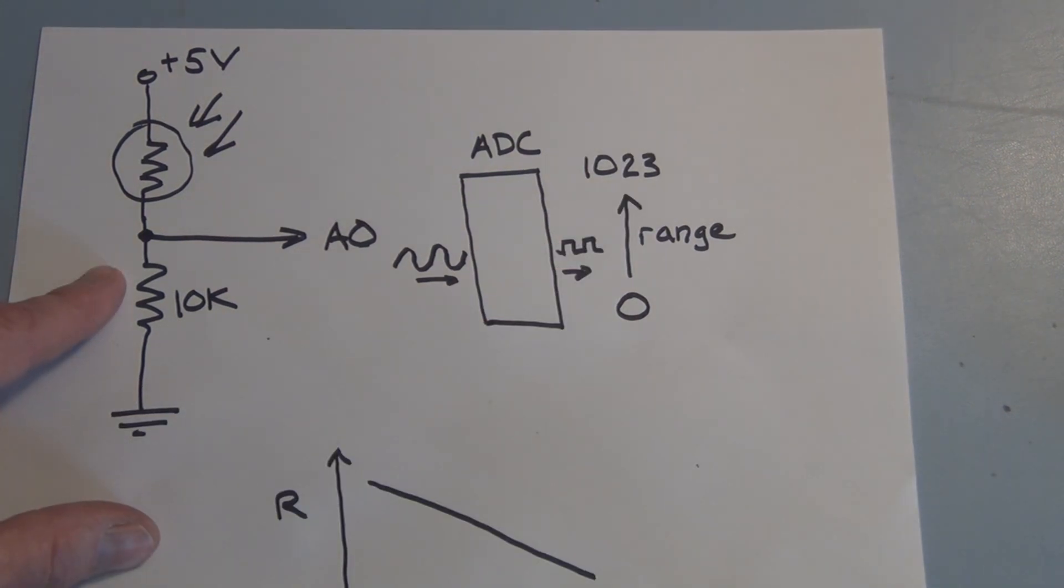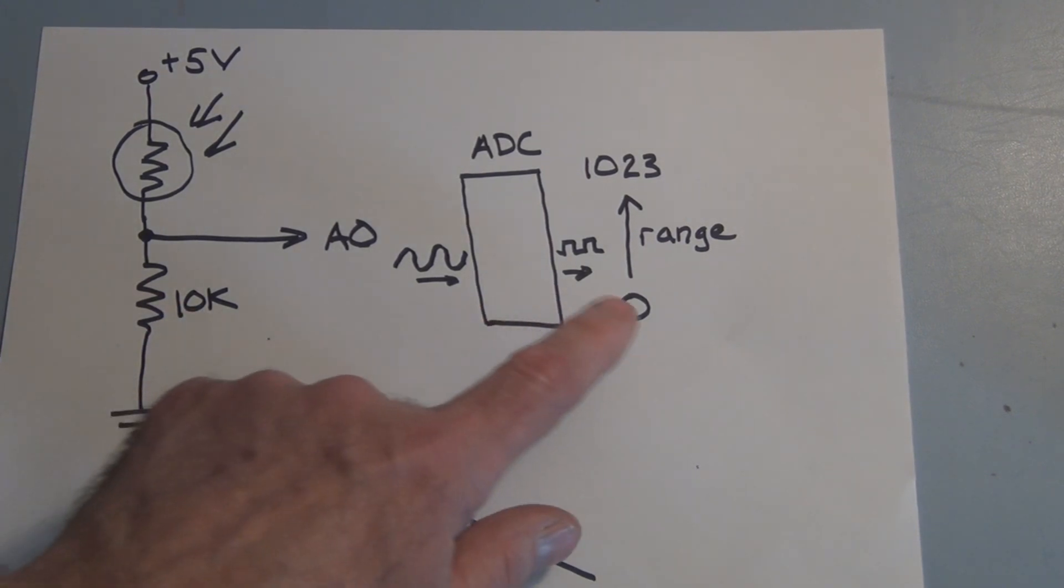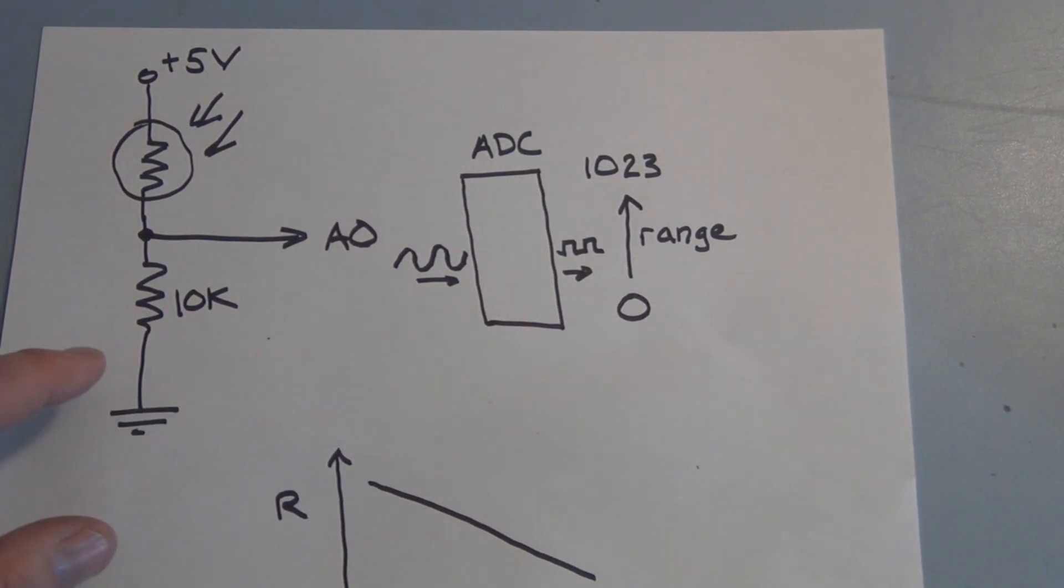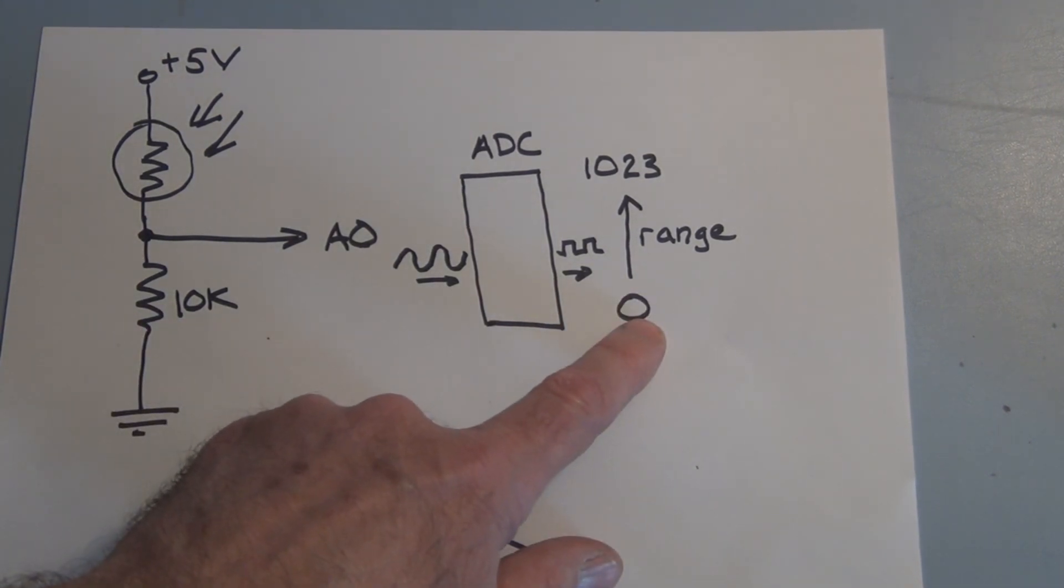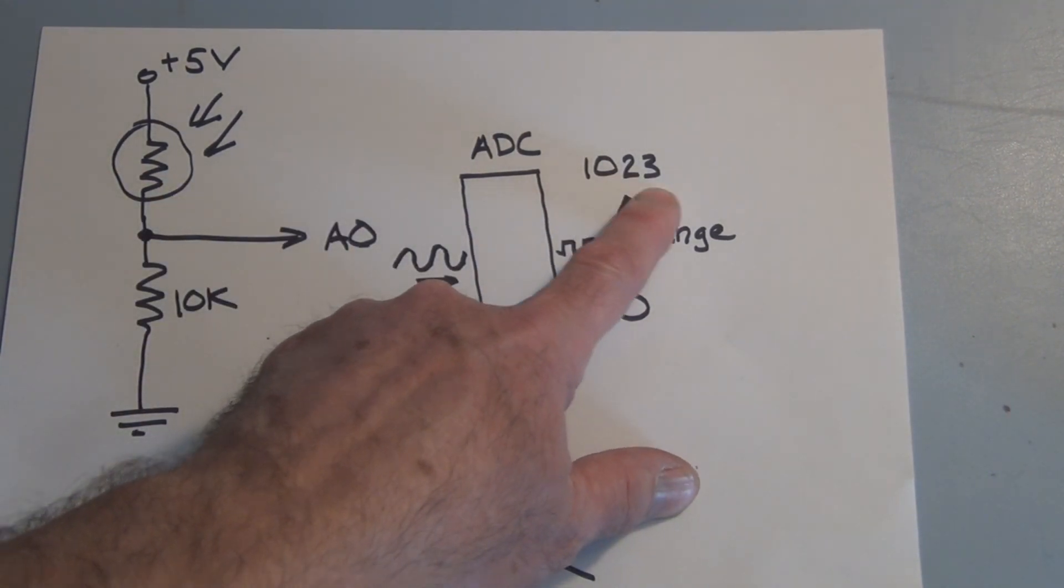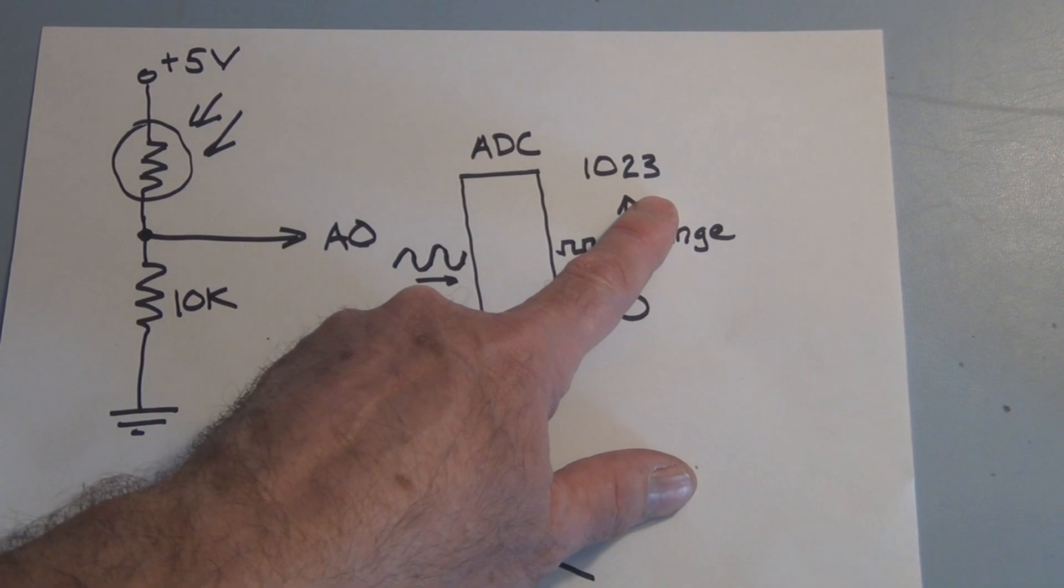The problem is we're not going to have complete darkness in a room and we need to figure out what the brightest light is in the room and scale that or convert that so that we use the full range of 0 to 1023. So once we figure out what the darkest light is we want that to be 0 and the brightest light we want to be 1023 in its digital representation.